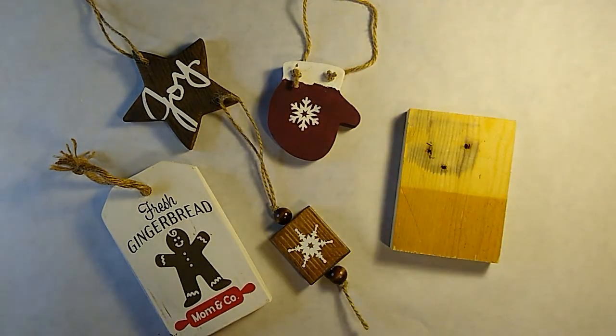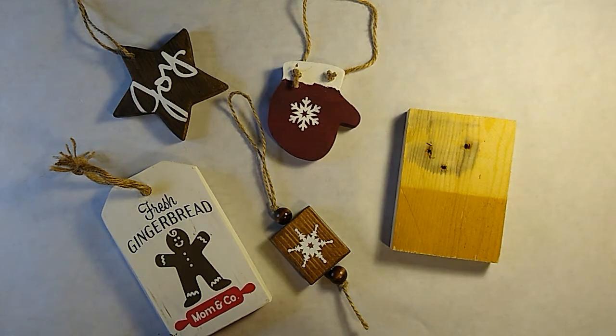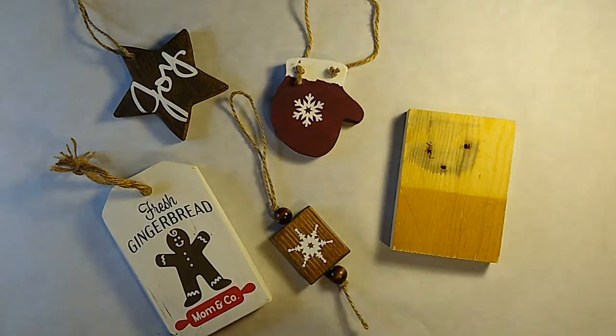I recently acquired a scroll saw from Habitat Restore in my town and this was the first thing that I cut out with it, was this star. I later made it into a joy ornament. This one is a little mitten ornament and I've made several of these. They're easy to cut out and then we just used a drill press to make the holes for the jute hanging string.